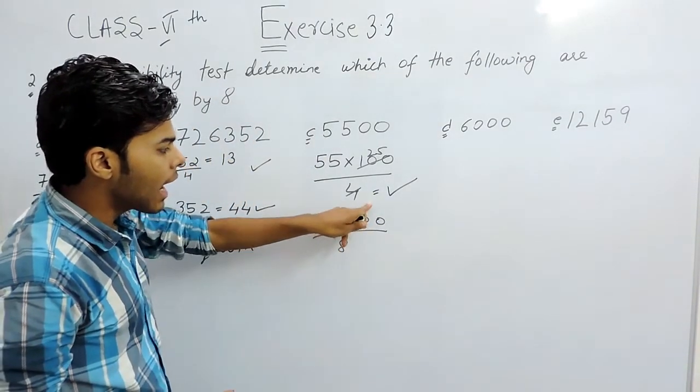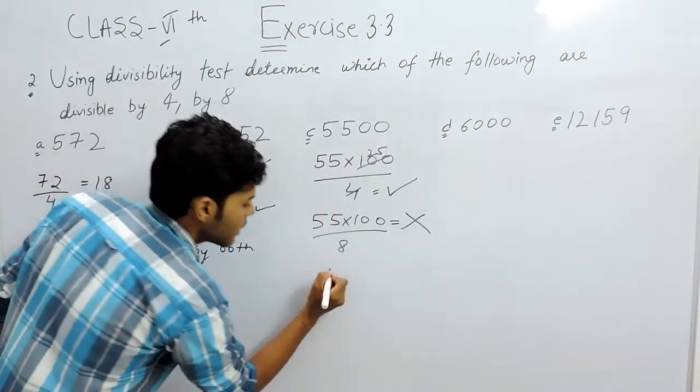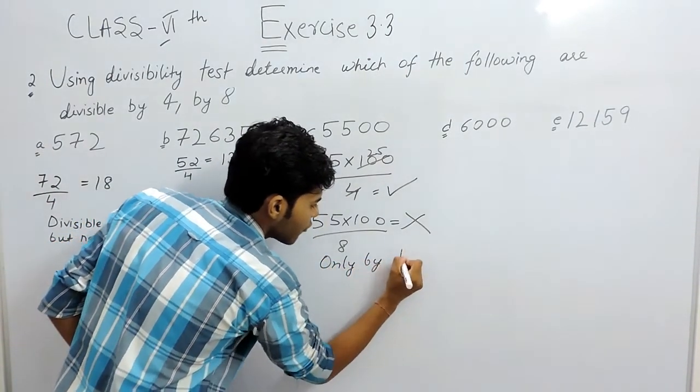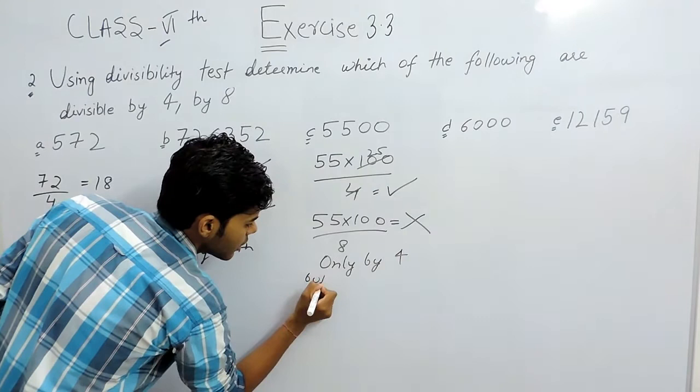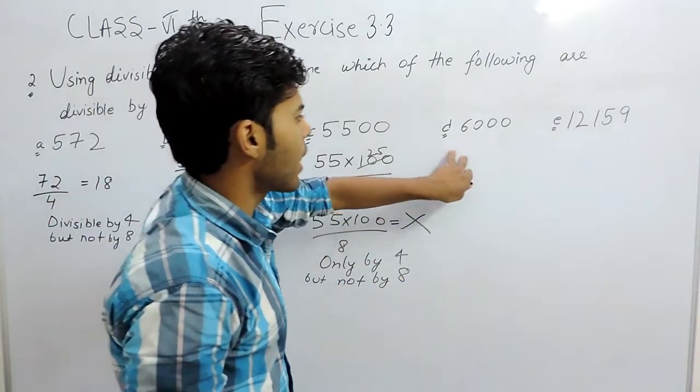So it won't be divisible by 8. Then we can write only by 4 but not by 8.